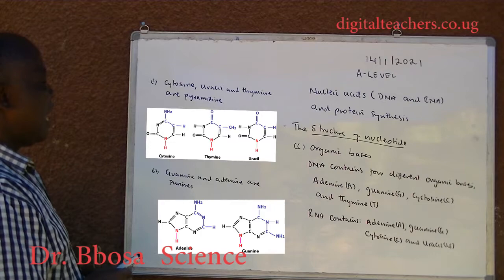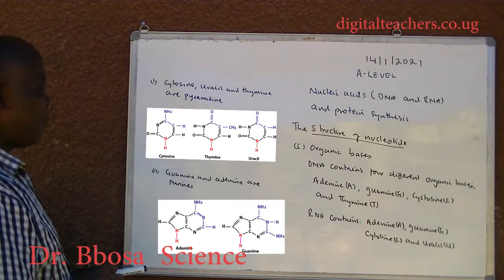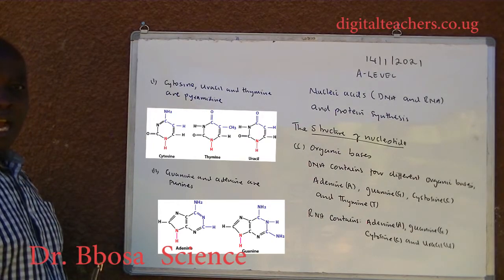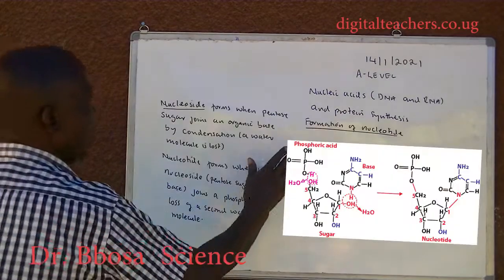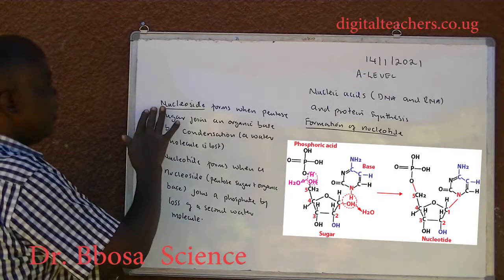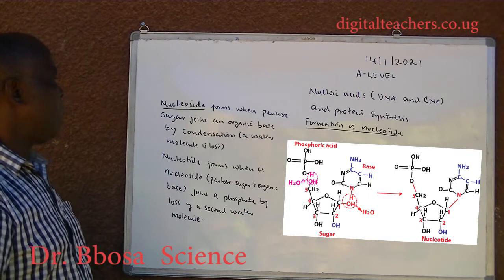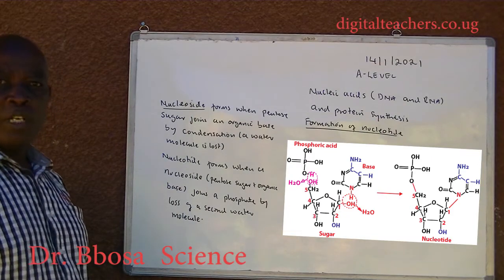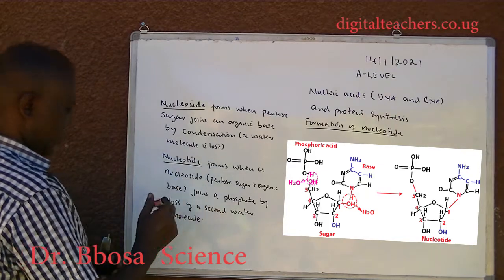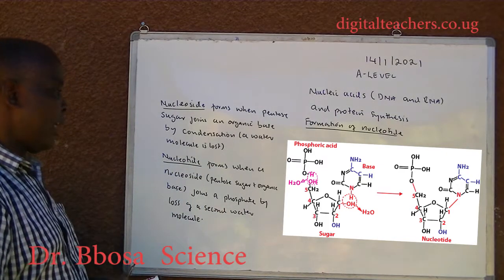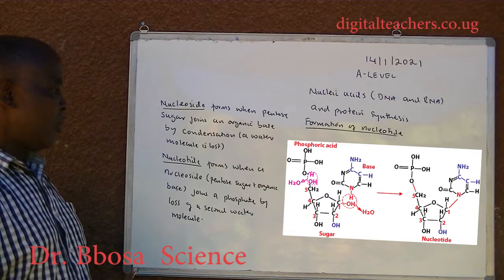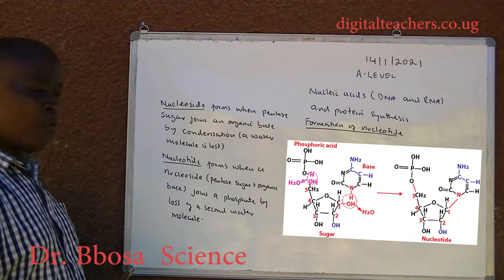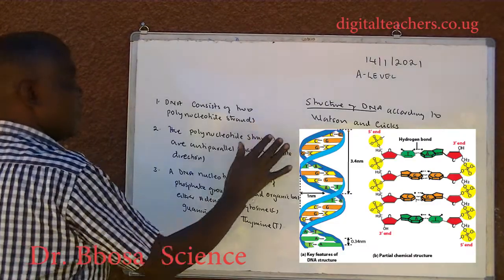Cytosine, uracil, and thymine are pyrimidines. Formation of a nucleotide: a nucleoside forms when pentose sugar joins an organic base by condensation — a water molecule is lost. A nucleotide forms when a nucleoside (pentose sugar plus organic base) joins to a phosphate by loss of a second water molecule.